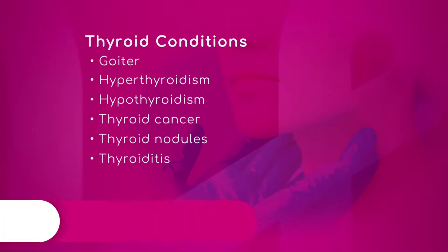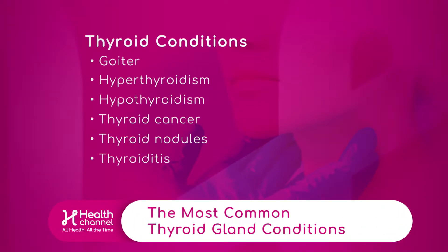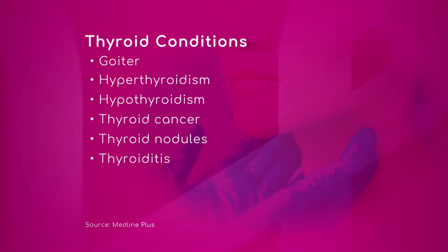Doctor, please give us an explanation of goiter. A goiter is an abnormal enlargement of the thyroid gland. It can be caused by a lack of iodine in the diet — that's why iodine was added to salt in certain endemic areas. On the coast it's not essential. There are also idiopathic reasons where no one truly understands, and there is also a condition called Hashimoto's, which we'll talk about momentarily.